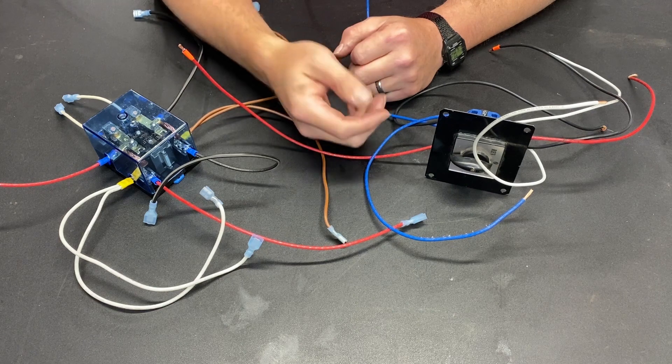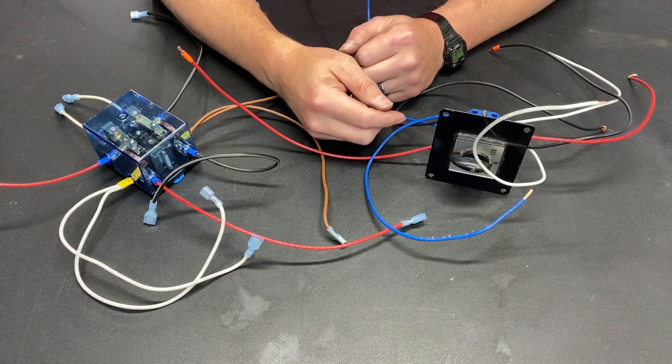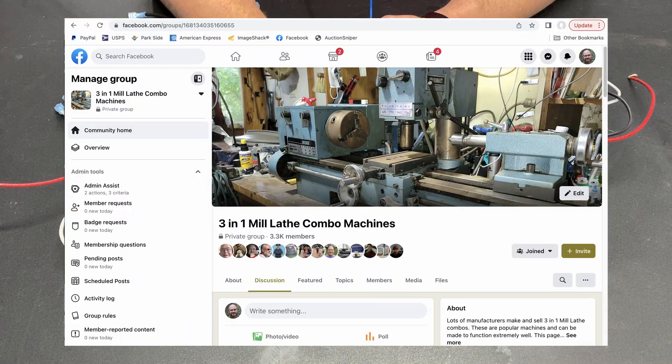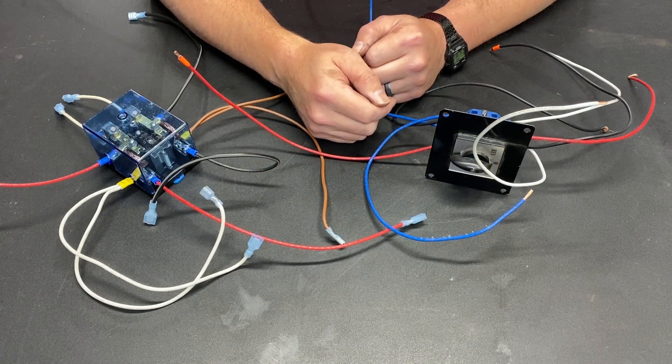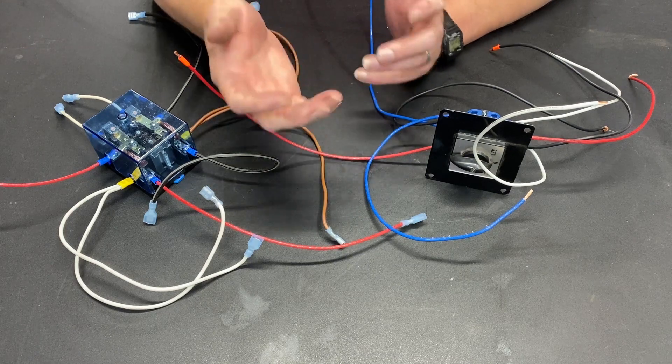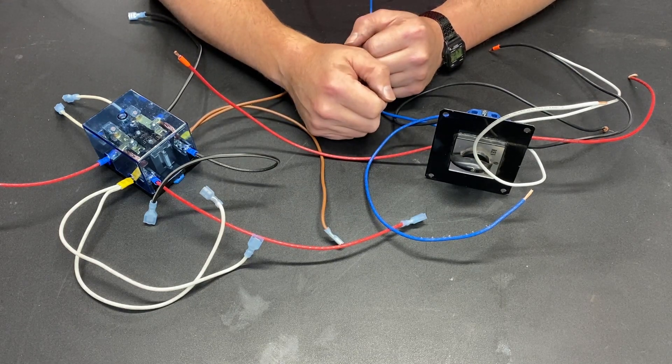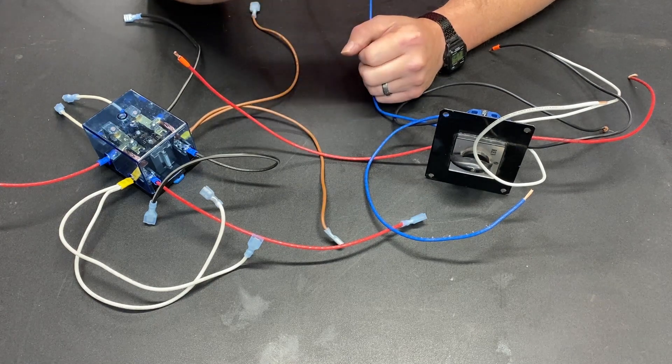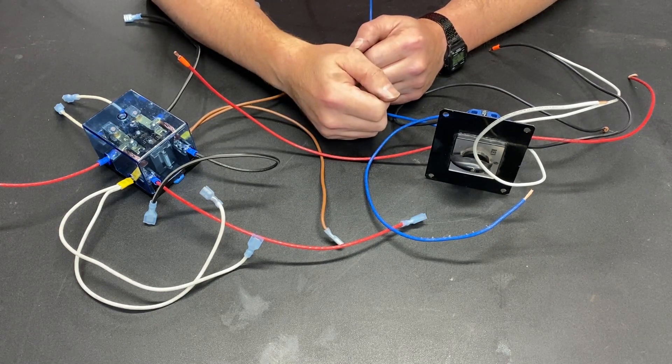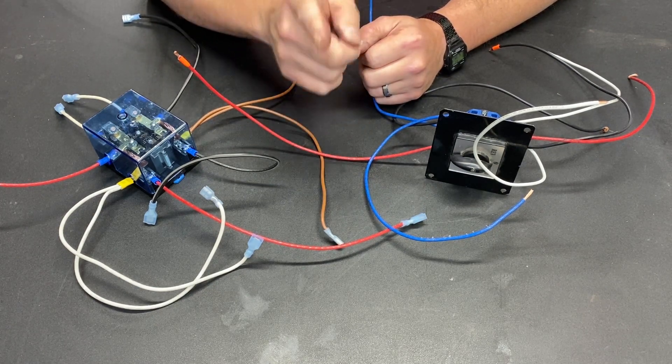I was posting that information and that video on the Mill Lathe Combo Facebook page and one of the very intelligent gentlemen there said it would be a whole lot more user friendly if you could make it so that when the power is turned off the brake automatically engages. And I thought that makes a lot of sense.